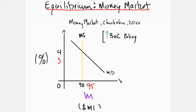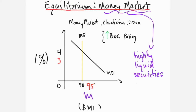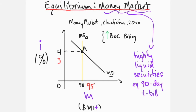The money market for Chakistan in 20XX is the market where financial instruments with high liquidity and short-term maturities of less than one year are traded. Short-term nominal interest rates are on the y-axis and quantity of money in M1+ units on the x-axis. The initial equilibrium is at point A — the intersection of money demand MD and the initial money supply of 90 units, MS0 — where interest rates are four percent given the economy's demand for money.